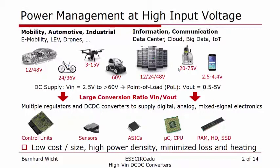With that, we get such a high voltage — up to 60 volts and above — as an input, and we want to supply electronics which run from lower voltages below 5 volts. So in the end, we see very large conversion ratios of input over output voltage, required to supply various digital, analog, and mixed-signal electronics. These voltage regulators and converters are placed at the point of load, and as the number of electronics is increasing, the number of such DC-DC converters is also increasing.